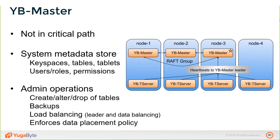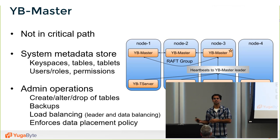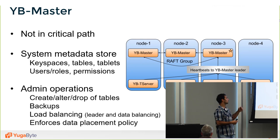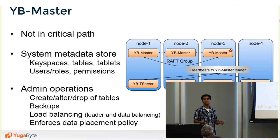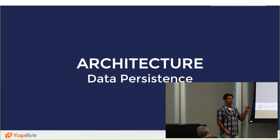The master — the second process — is a strictly background process, not involved in serving I/O and not in the critical path. It keeps system metadata: key spaces, tables, tablets, users, roles, permissions, and so on. It also enforces administrative operations like creating tablets across multiple nodes in a fail-safe way, coordinating schema changes, and managing other background activities.